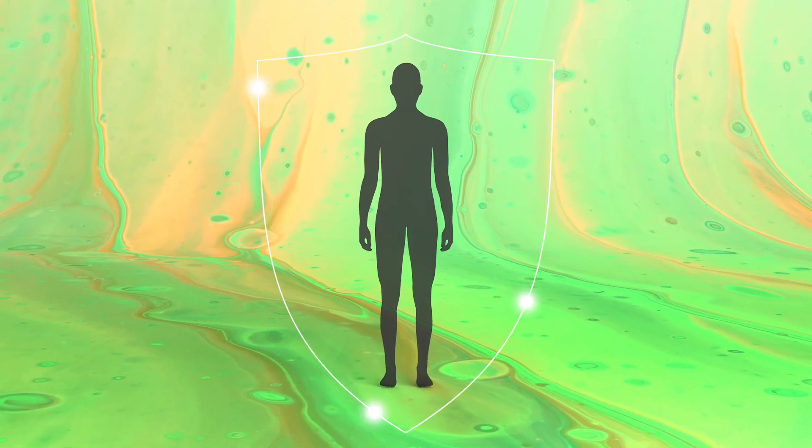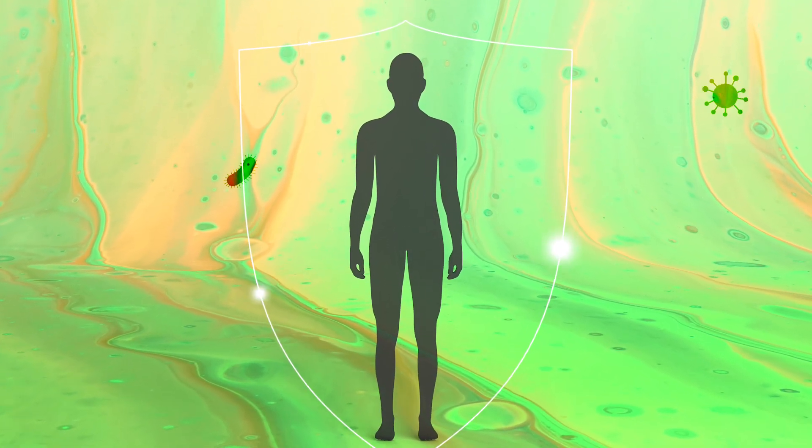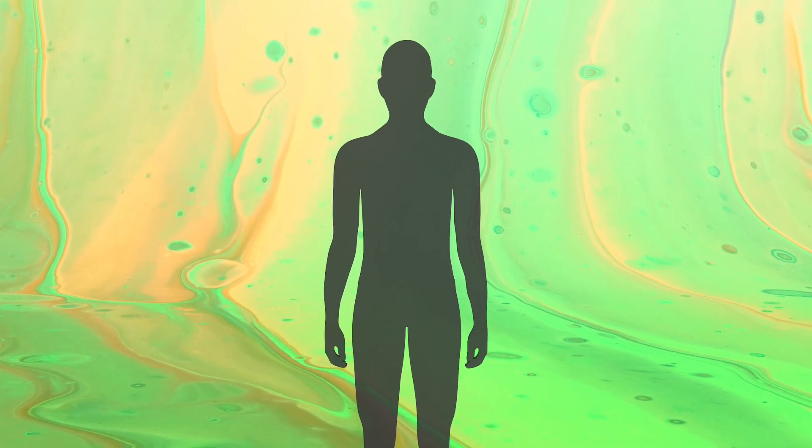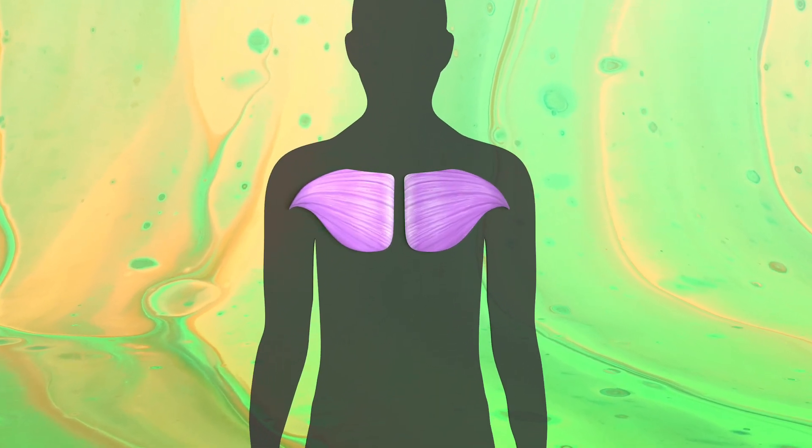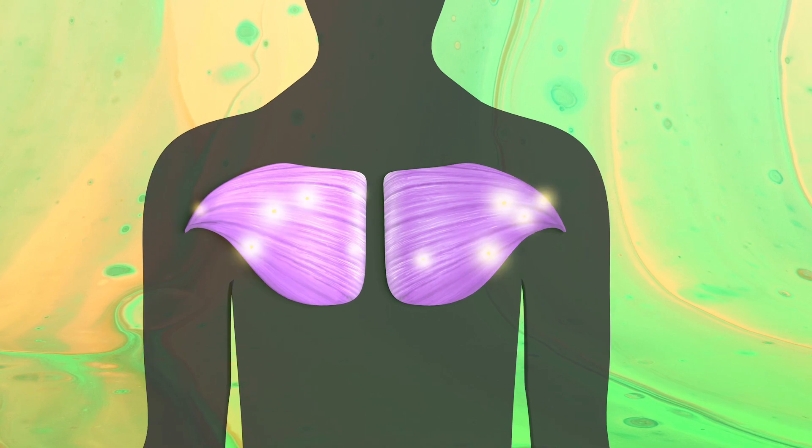The immune system protects our body against external challenges, particularly from bacteria and viruses. It also protects us against internal threats, for example, tumor cells which divide in an uncontrolled manner.